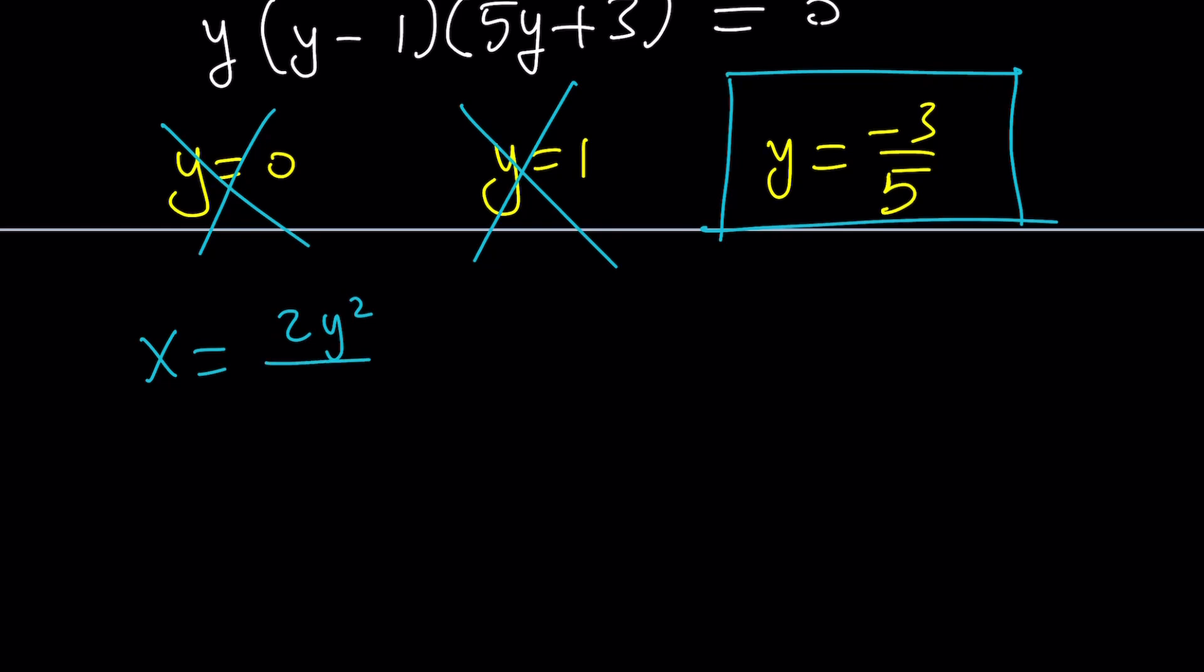So y equals that, and what is x? 2y squared divided by 1 minus y squared. Remember that? Replace y with negative 3 fifths. 2 times 9 over 25, divide by 1 minus 9 over 25. Forget about the 25 and just focus on this. 2 times 9 is 18. 25 minus 9 is 16. And then if you divide by 2, you're going to get 9 over 8 as the x value.